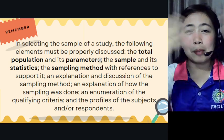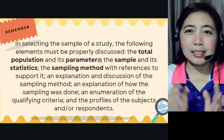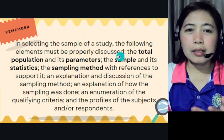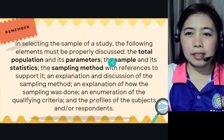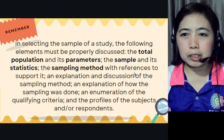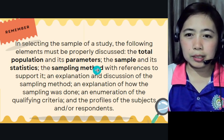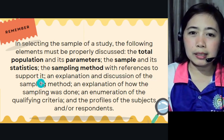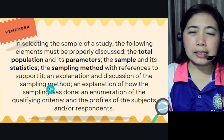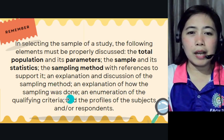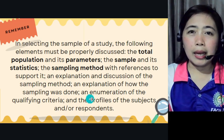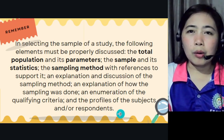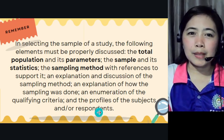To wrap up — this is what we really need to remember in our sampling. In selecting the sample of a study, the following elements must be properly discussed in your methodology: the total population and its parameters, the sample and its statistics, the sampling method with references to support it, an explanation and discussion of the sampling method, an explanation of how the sampling was done, and an enumeration of the qualifying criteria and the profiles of the subjects and/or respondents.